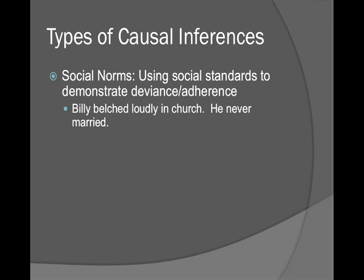Social norm cues are used to establish what type of character you're talking about — whether they conform to social norms or are the rebellious type. For example: 'Billy belched loudly in church and he was never married.' That's a big jump, but because of that first sentence it makes sense — he's established as a terrible person.